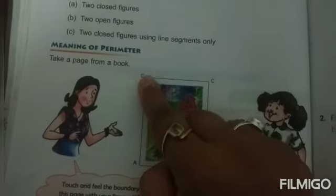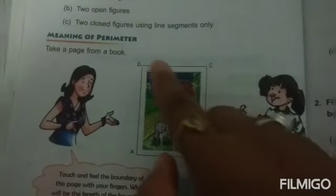Phir scale ki help se aapne ye lens find out karne hai. Dekhiye, ye page joe hai kitne line segment se bana hua hai. One, two, three, four. And you will see how this figure looks like closed figure.